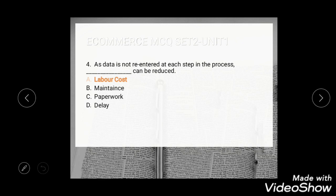Question 4: As data is not re-entered at each step in the process, dash can be reduced. The options are labour cost, maintenance, paperwork, and delay. The correct answer is labour cost — labour cost can be reduced.